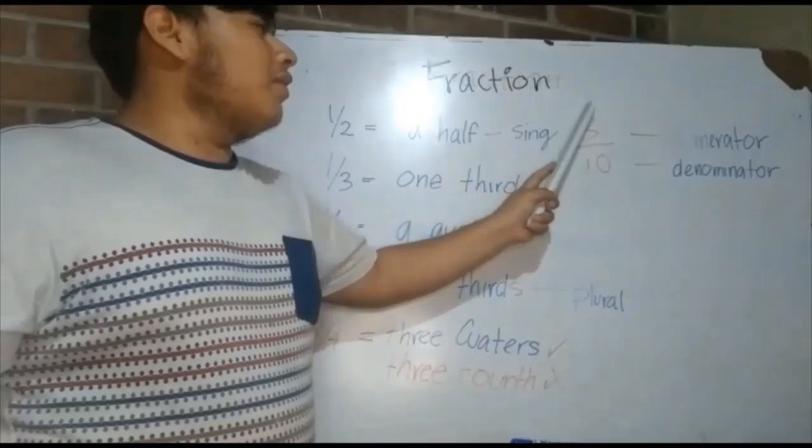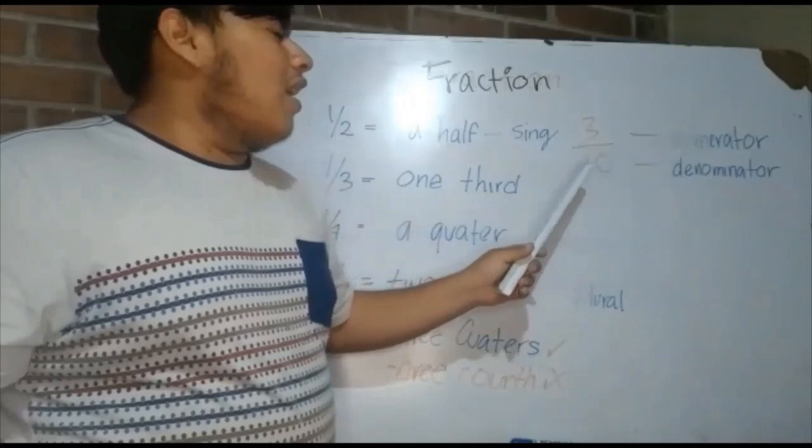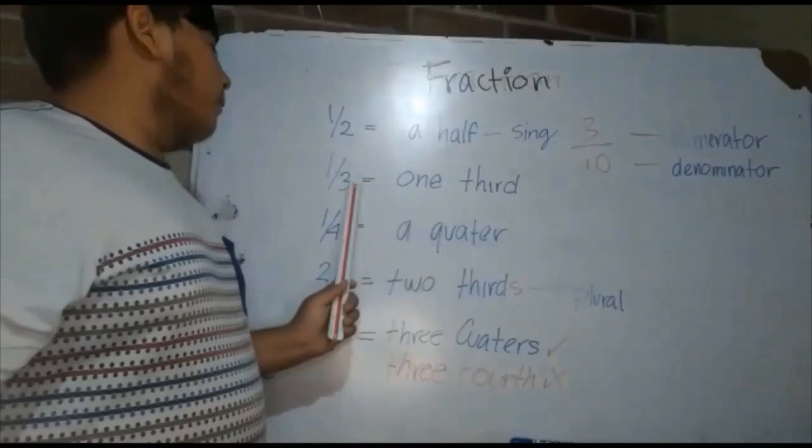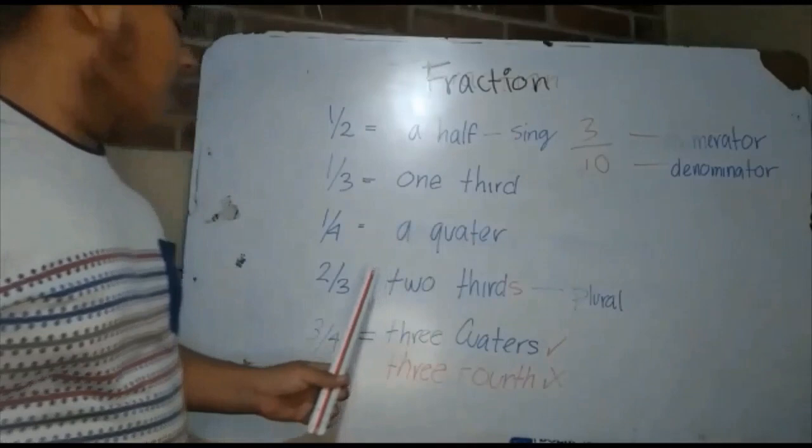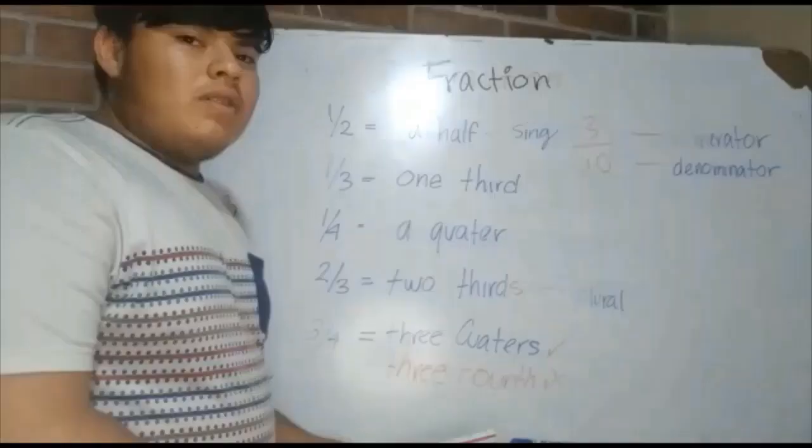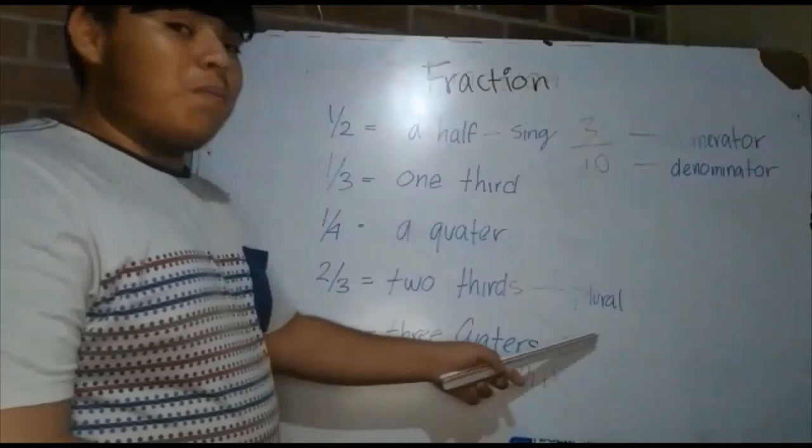Fractions. This is a number of the order. For example, one half singular, one third, one quarter, two thirds plural, three quarters, three fourths.